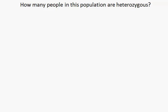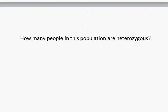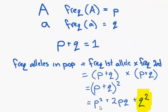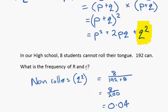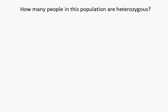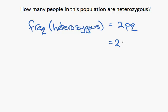So how many people in this population are heterozygous? If we go back up here, P squared, frequency of homozygous dominant. Q squared, frequency of homozygous recessive. 2PQ, frequency of heterozygous. Since we already know P and Q, we can simply plug them in. The frequency of heterozygous equals 2PQ equals 2 times 0.8 times 0.2 equals 0.32.